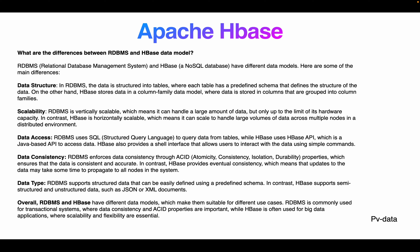The second difference is scalability. RDBMS is vertically scalable — you keep adding hardware to handle larger amounts of data, but it is limited by the hardware. In contrast, HBase is horizontally scalable, which means it can handle large volumes of data across multiple nodes in a distributed environment. You can keep adding computers to scale up, rather than being limited to a single machine.